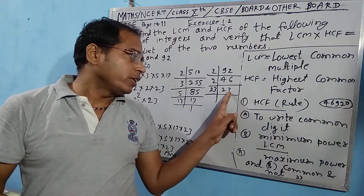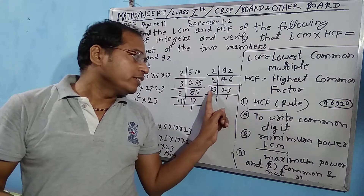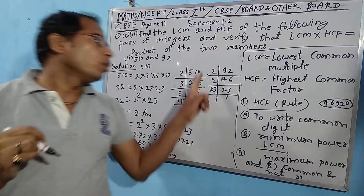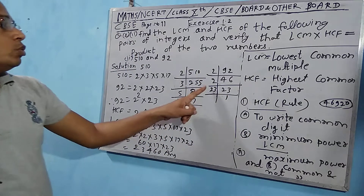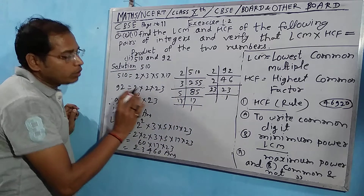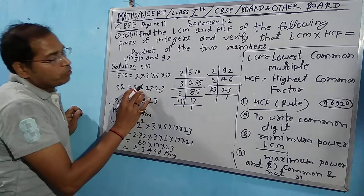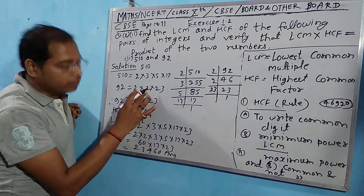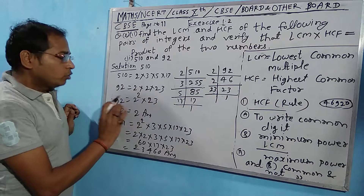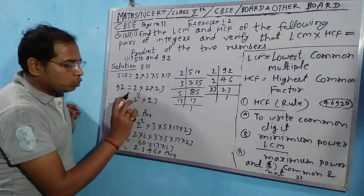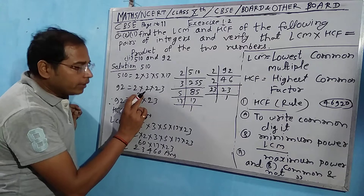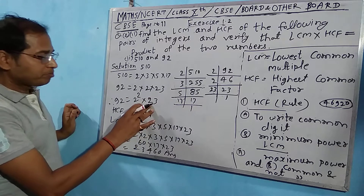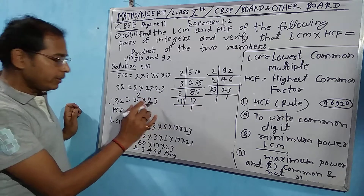Then dividing by 23: 23 divides once leaving 1. So 92 = 2 × 2 × 23. We write 92 as 2² × 23¹.